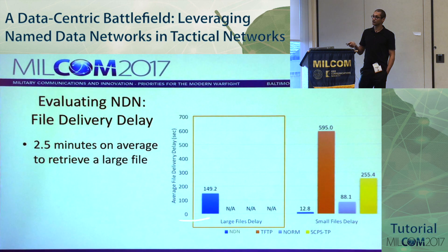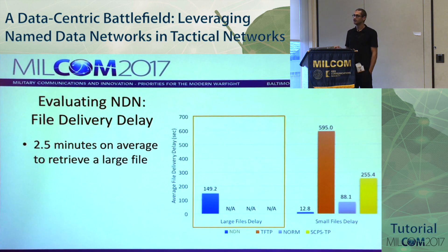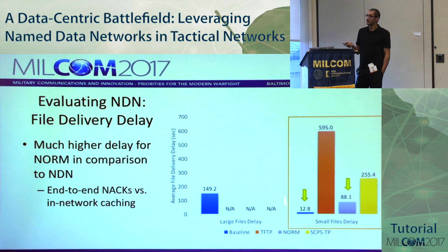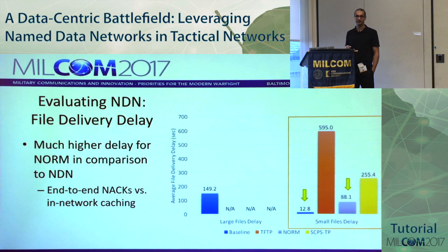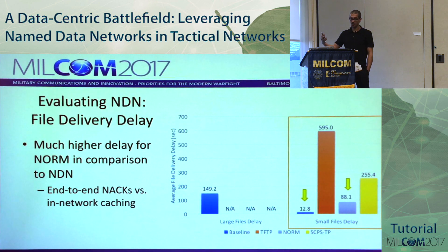For file delivery delay on large files, NDN achieved about two and a half minutes — within the three-minute validity window. None of the other protocols delivered anything, so there was no delay to calculate for them. For small files, NDN achieved 12.8 seconds. The closest competitor by delivery ratio was NORM, at about 88 seconds — due to end-to-end negative acknowledgements versus NDN's ability to retrieve missing data from the closest in-network cache rather than going all the way back to the producer.